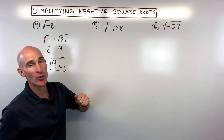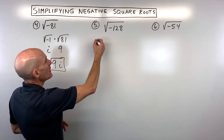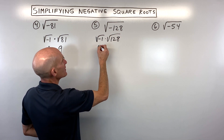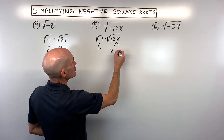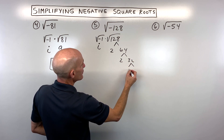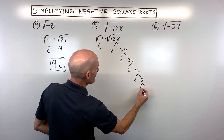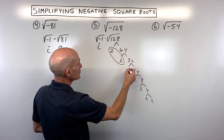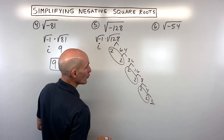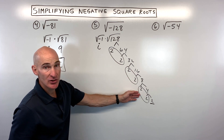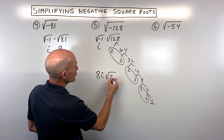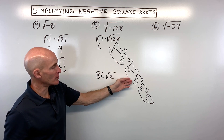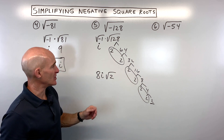For number 5, the square root of negative 128 — that's a larger number, so let's use the prime factorization tree. This is really the square root of negative 1 times the square root of positive 128. Square root of negative 1 is i for imaginary. 128 is 2 times 64; 64 is 2 times 32; 32 is 2 times 16; 16 is 2 times 8; 8 is 2 times 4; 4 is 2 times 2. We're looking for groups of two of the same numbers. We have one group of 2s, two groups of 2s, three groups of 2s, with one 2 left over. So this gives us 2 times 2 times 2, which is 8, giving 8i with the square root of 2 left over. Remember: for each group you pull one out, so you multiply — 2 times 2 times 2 equals 8 — not add them.